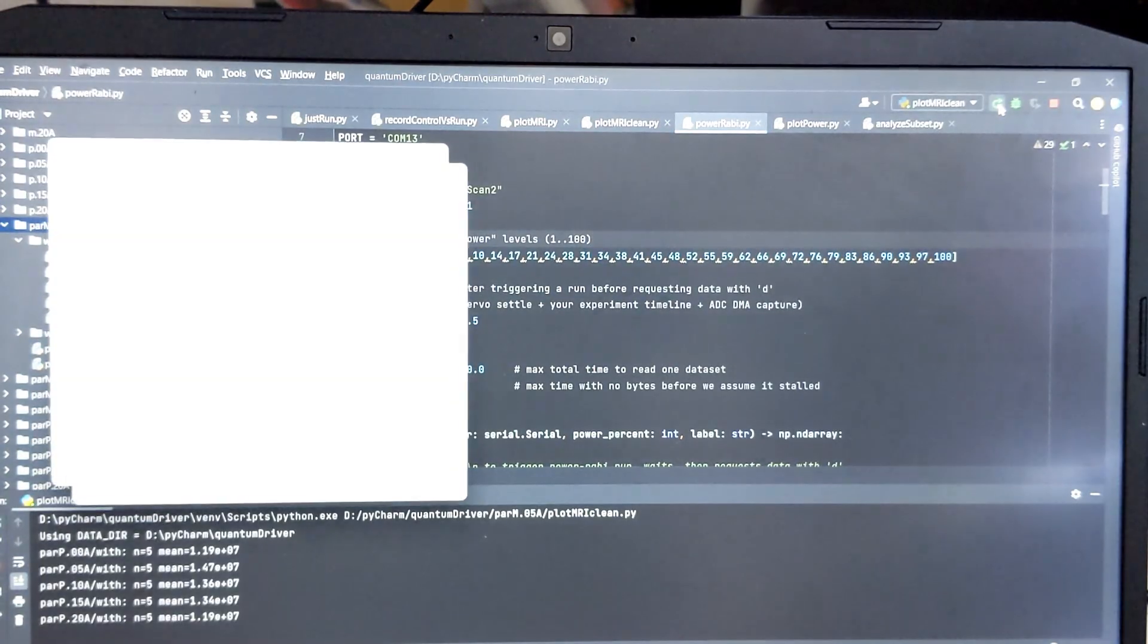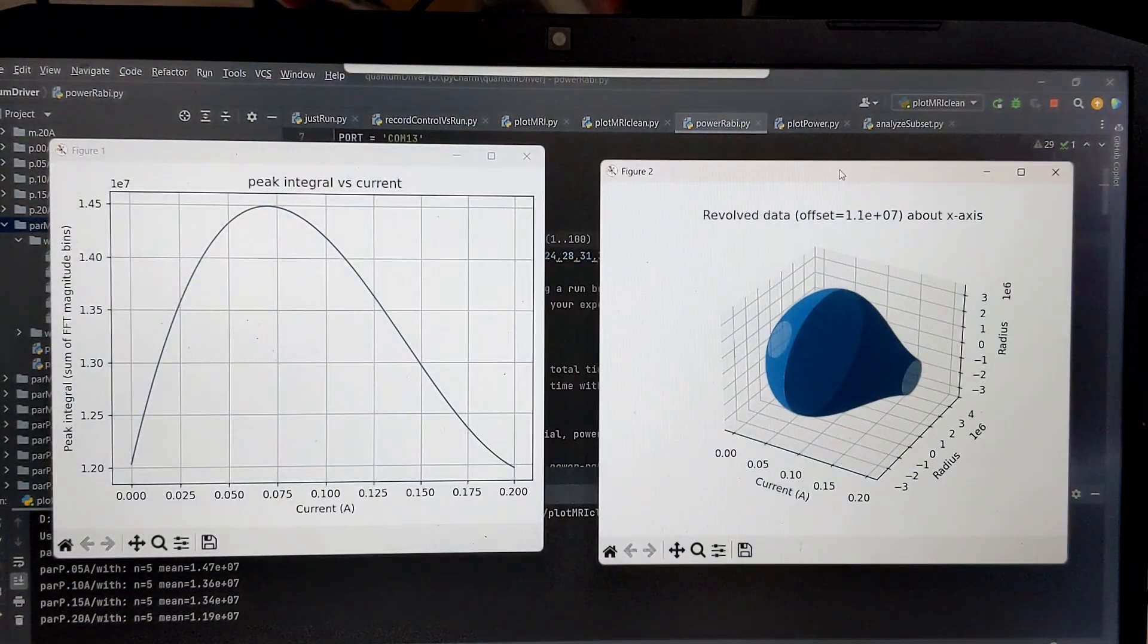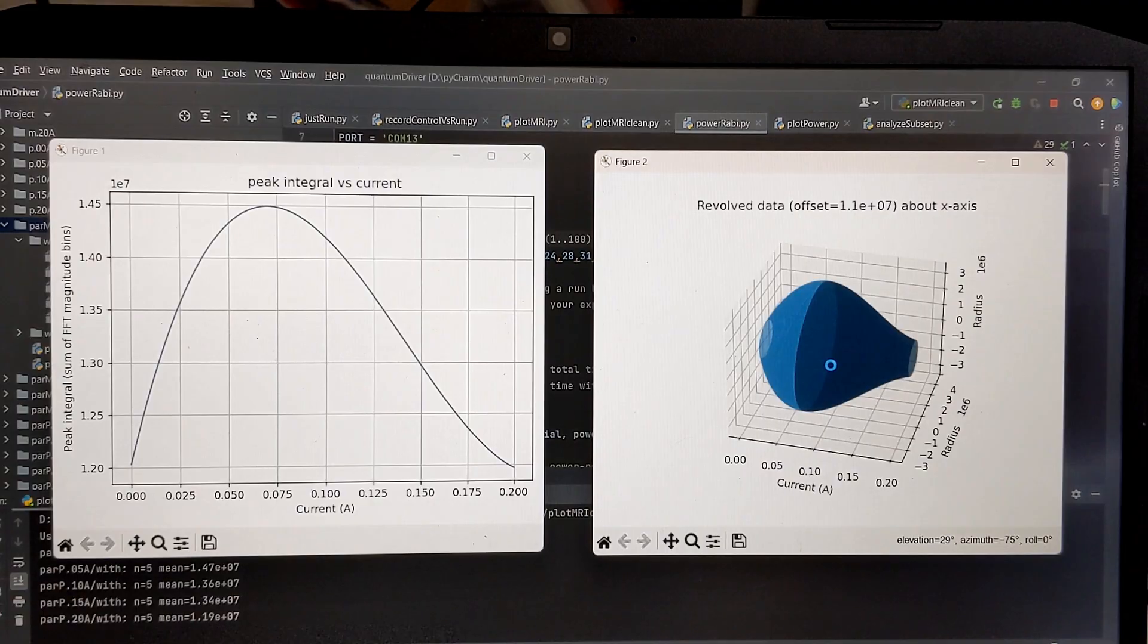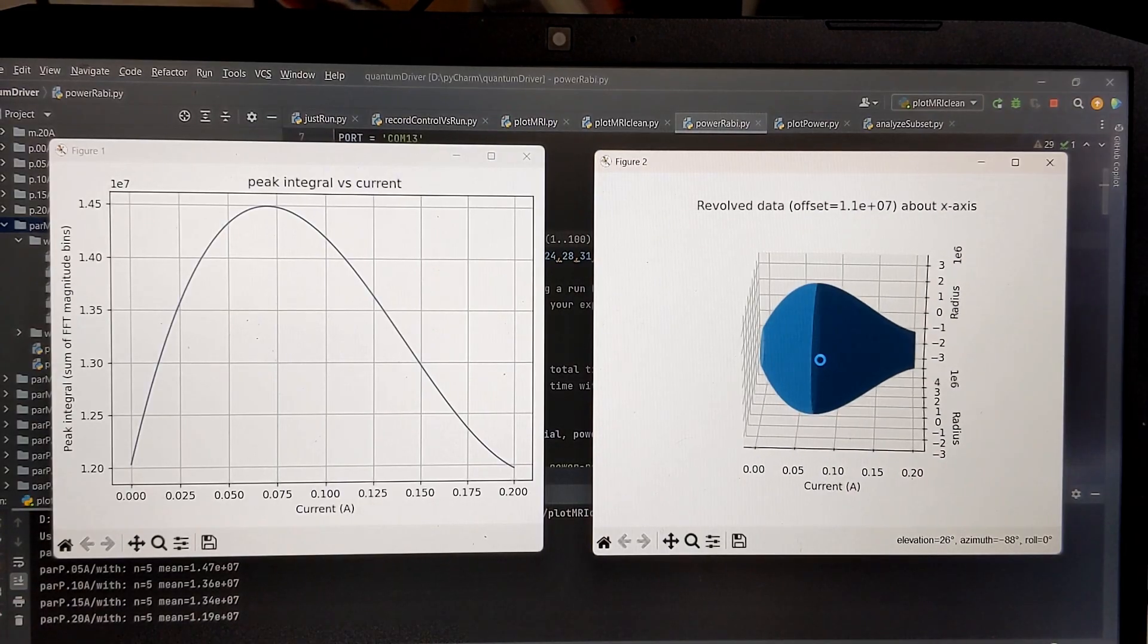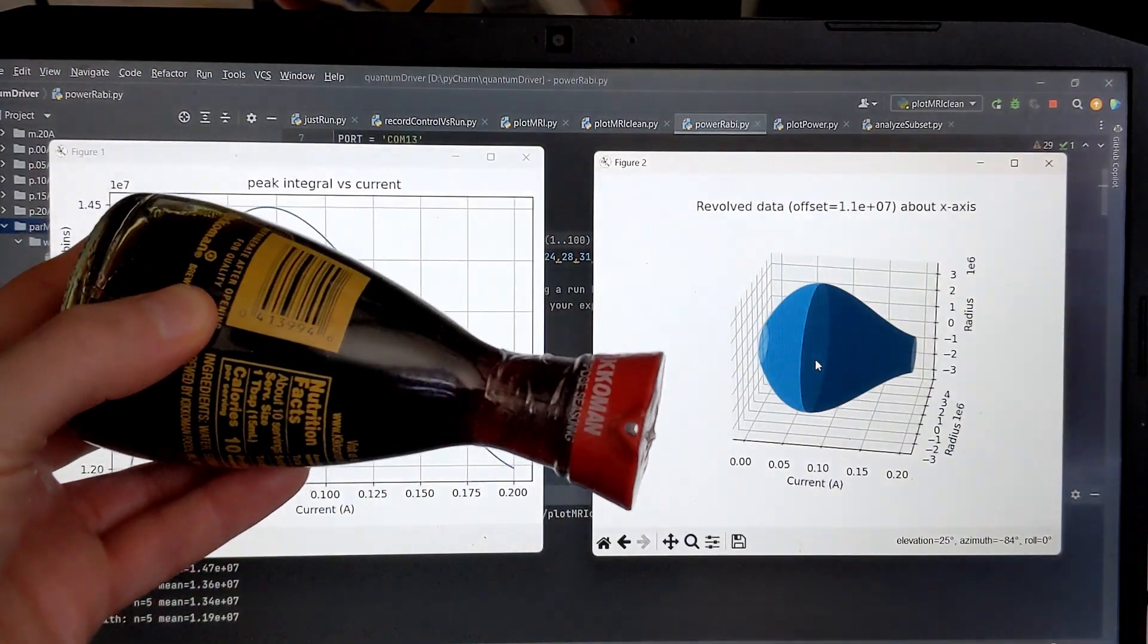All right, it took a while but we finally finished gathering all the data. This is what our data looks like, and if you take that one-dimensional data and you revolve it around the axis, we get this shape, which is pretty close I would say.